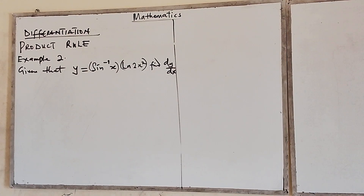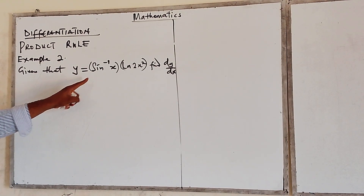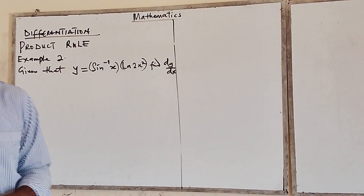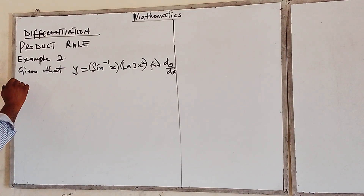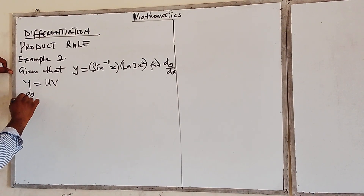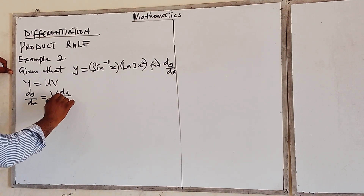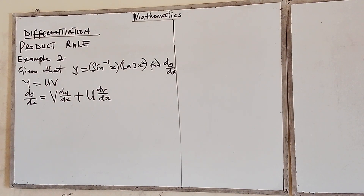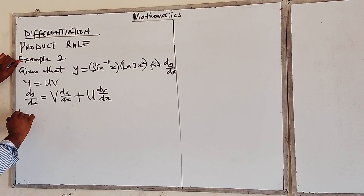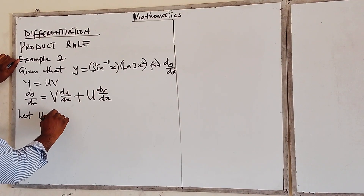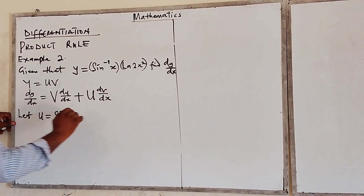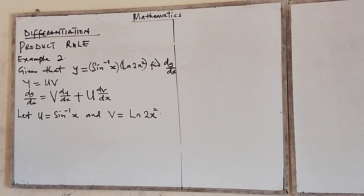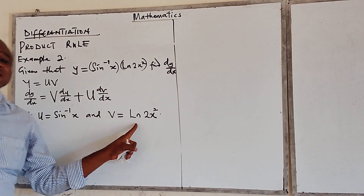Still looking at the product rule, there's a question before us: given that y is equal to sine inverse of x times ln(2x²), we should find dy/dx. Remember, if y equals u·v, then dy/dx equals v·(du/dx) plus u·(dv/dx). In this question, let u be equal to sine inverse of x, and v be equal to ln(2x²). This is an inverse trigonometry function, while this is a logarithmic function.